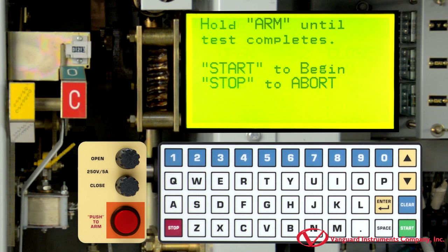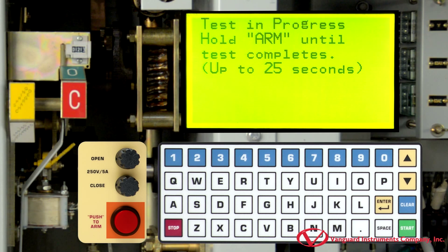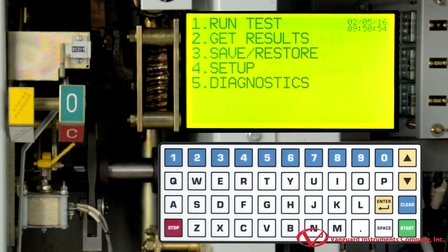Hold down the arm switch and then press the start key to start performing the test. Continue holding down the arm switch until testing is complete. Once testing is finished, we will be returned to the main menu.